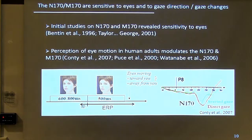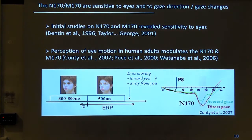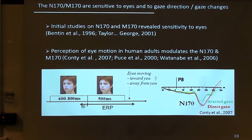Regarding the early neural coding of gaze direction and social attention: it has been known for long that the N170 and M170 — the typical components recorded in response to faces — are sensitive to eyes and to gaze direction. This is one of the early studies we did on the perception of gaze movement with EEG, where we showed that a tiny movement of gaze yielding either gaze contact or averted gaze would elicit a clearly different N170 response.